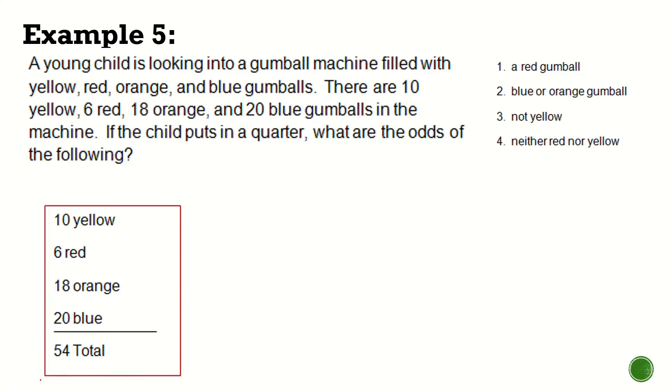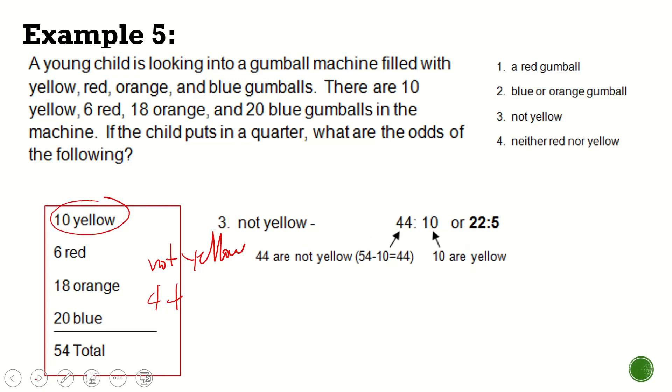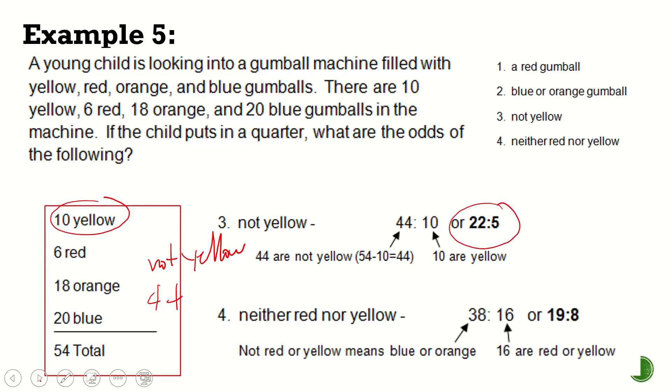The third one is not yellow. So let's count the not, let's see the yellow first. There are 10. Obviously, the not yellow will be 54 minus 10, which is equivalent to 44. The not yellow. So that will be equal to this one, 44 is to 10, or 22 is to 5 is the answer.